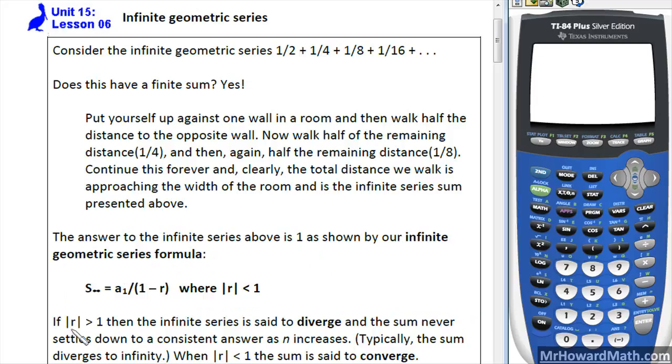If the absolute value of r is greater than 1, then the infinite series is said to diverge and the sum never settles down to a consistent answer as n increases. Typically the sum diverges to infinity. When the absolute value of r is less than 1, the sum is said to converge.